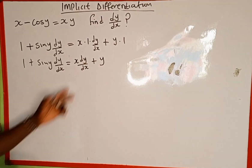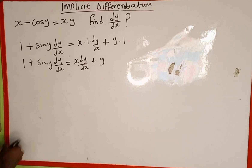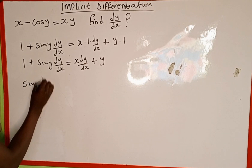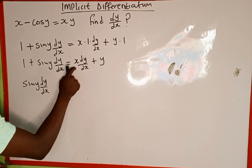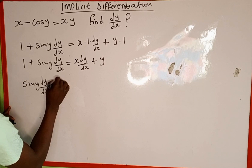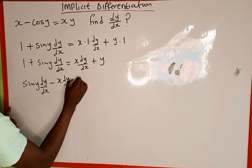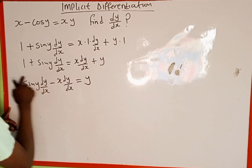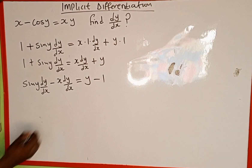The next thing is to bring all terms with dy over dx together. We have sine y times dy over dx on the left, and when positive x times dy over dx crosses the equality sign it becomes negative x times dy over dx. On the right we have y, and when the 1 crosses to the other side it becomes negative 1.